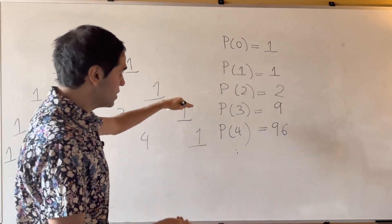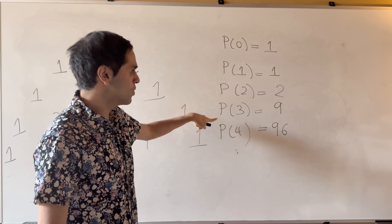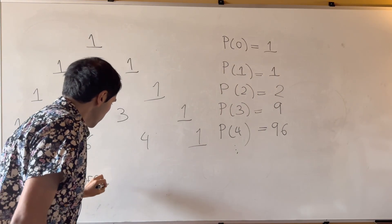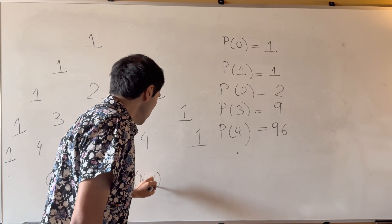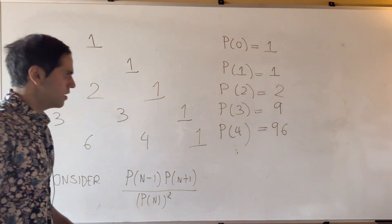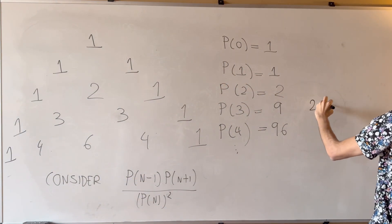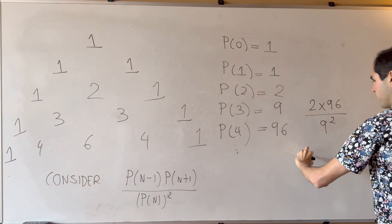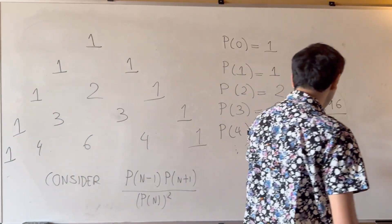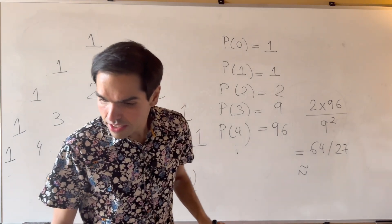For each value, we want to consider the product of the past and the future divided by the present squared. So consider P(n−1)×P(n+1) over P(n) squared. For instance, for n=3, that would be 2×96 over 9 squared, which simplifies to 64/27.